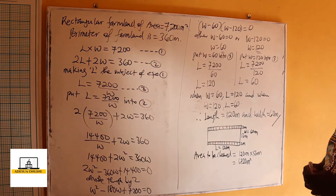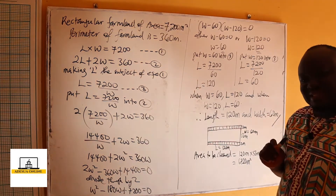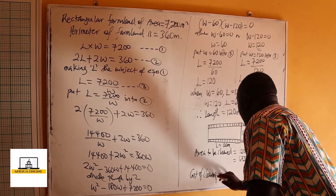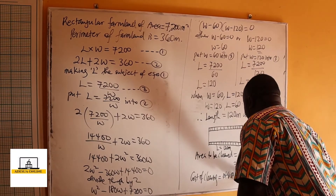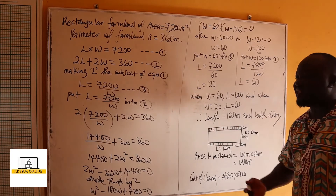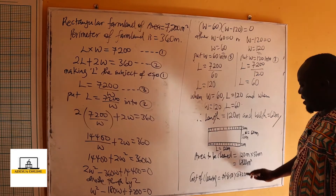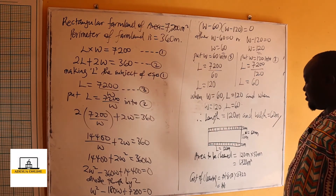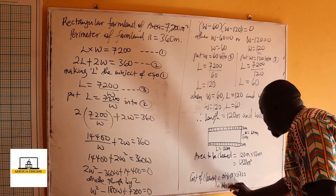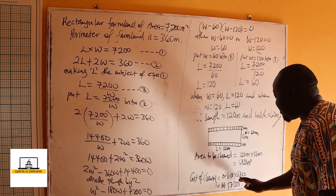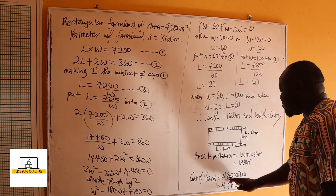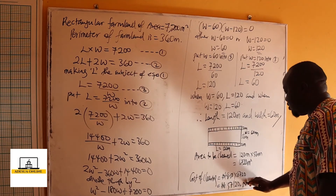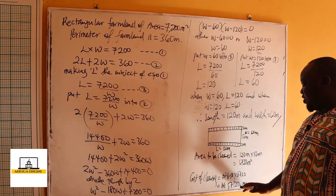The area left to clear is 6,720 square meters. We are told the charge is 8.50 Naira per square meter, so the cost of clearing equals 8.50 times 6,720, which gives us 57,120.00 Naira.